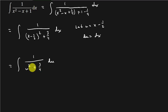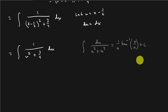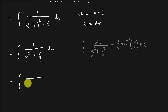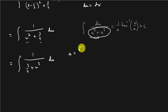So what does that look like? If you remember, we have the integral of du over a squared plus u squared, which equals 1 over a times inverse tangent of u over a plus C. Here, a squared is 3 fourths. We could write this as 1 over 3 fourths plus u squared du to match that form with the constant first. So a is equal to square root of 3 over 2, because 3 fourths is a squared.